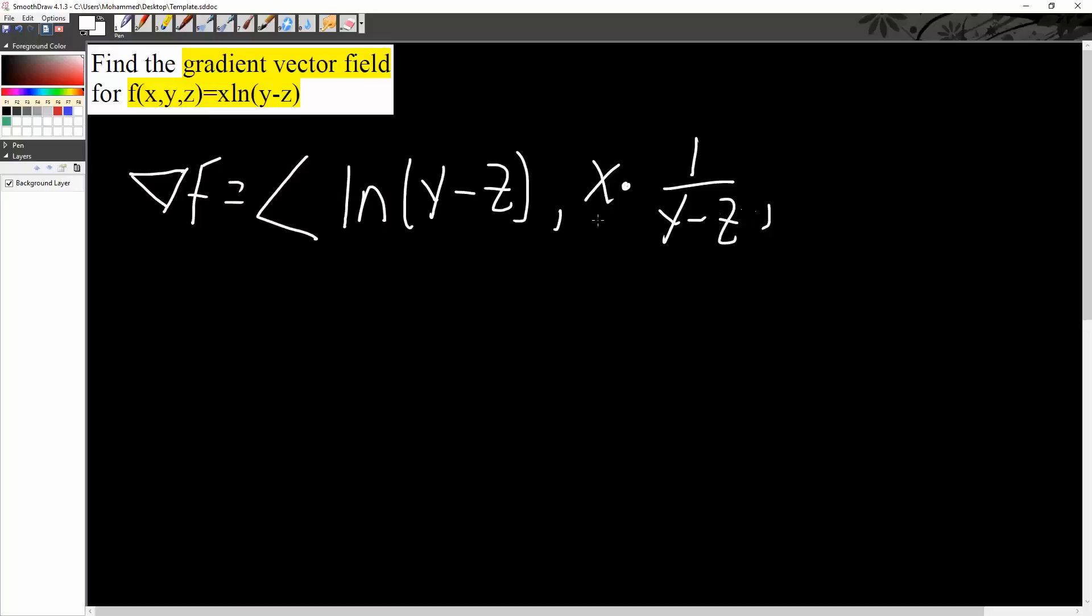And also we have to do z. So partial derivative in terms of z. Very much similar to this. But if you notice z is negative. So it would be x times minus 1 divided by y minus z.